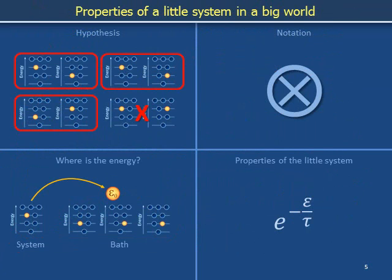We have just stated that the accessible configurations of a world are equally accessed. This idea will allow us to determine the properties of a system connected to a bath. We will analyze how the number of configurations of the world depends on the distribution of energy between the system and the bath. In order to present our discussion compactly, we first need to introduce some notation.